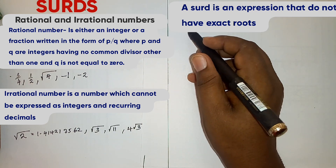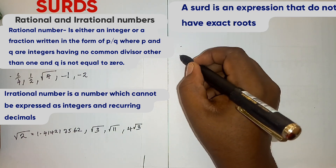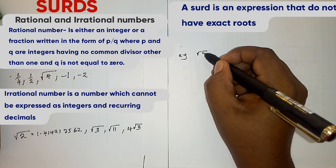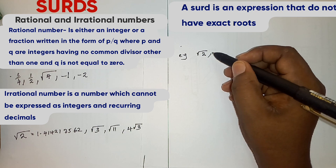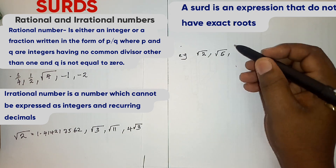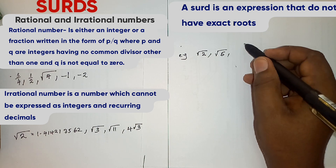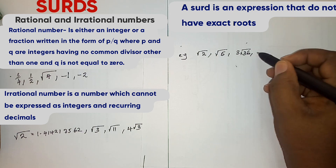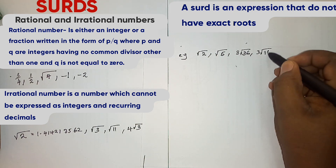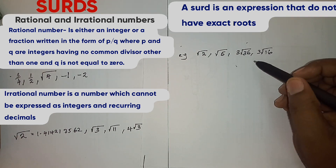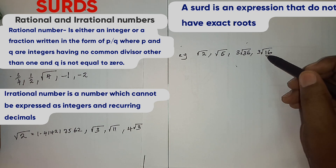So that means irrational numbers are surds. Examples of surds: we have square root of 2 — this does not have an exact root. We also have square root of 5, which also does not have an exact root. We also have cube root of 36 and cube root of 16. All these are examples of surds because they don't have exact roots.